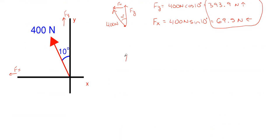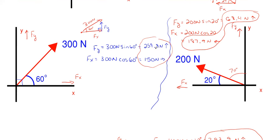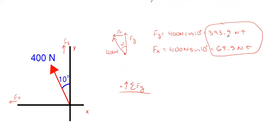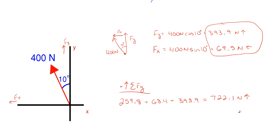We're going to sum forces in the FY direction, taking upward as positive and downward as negative. For FY: 259.8 upward is positive, 68.4 upward is positive, and 393.9 upward is positive. Adding all those up gives 722.1 Newtons in the upward direction — that is the combination of all vertical forces.